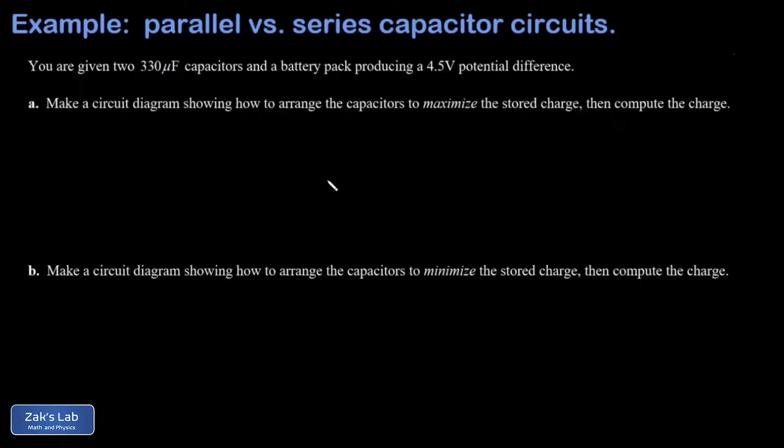In this problem, we're given three 330 microfarad capacitors and we're told we have a battery pack producing a 4.5 volt potential difference. In part A, we're asked to connect these capacitors in a way that maximizes the charge stored on the capacitors.